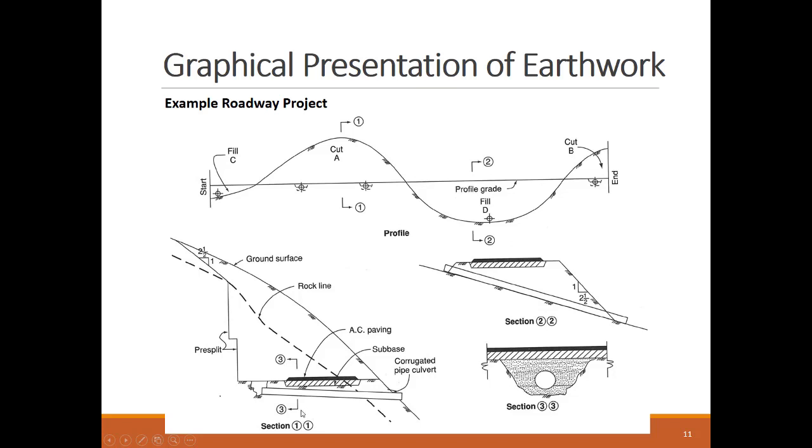Section 1-1 is made in a segment of the road that is mostly excavation or cutting, which you can see the cut elevation difference between the current ground surface and the finish grade.